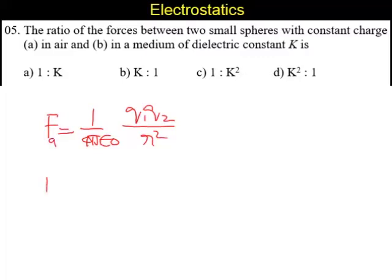If there is a medium in between, then in that case, this equation can be written as 1 by 4 pi epsilon naught. The dielectric constant of the medium has to come here. So it is again Q1, Q2 by R square.